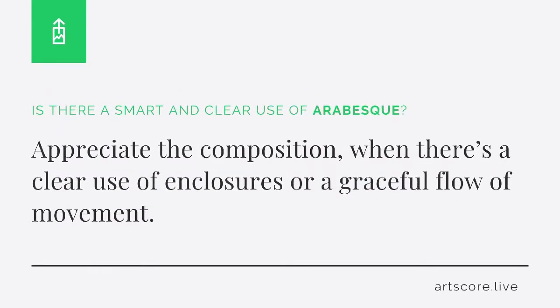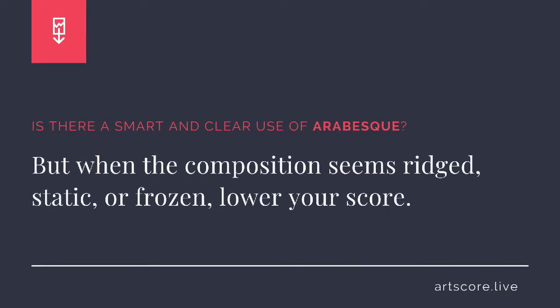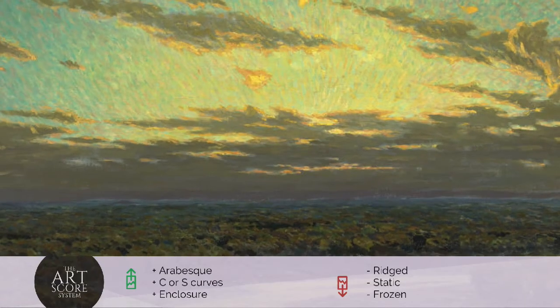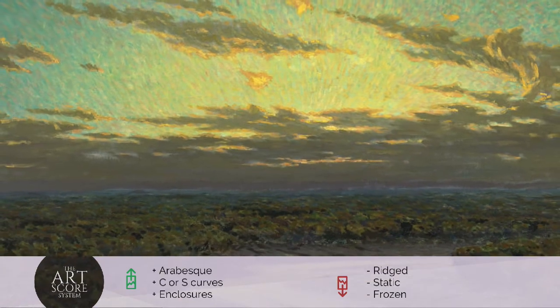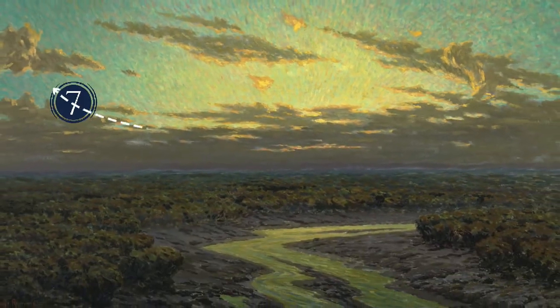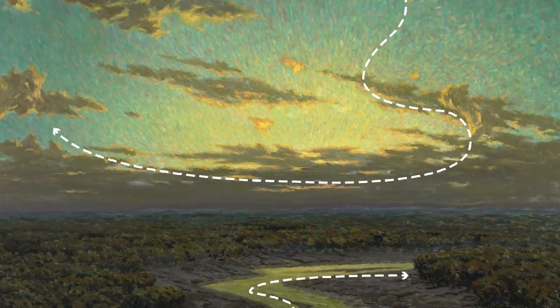Arabesque. Is there a smart and clear use of arabesques? Appreciate the composition when there is a clear use of enclosures or a graceful flow of movement. But when the composition seems rigid, static, or frozen, lower your score. I scored the artwork a 7. I see the movements gracefully and intelligently supporting the story.